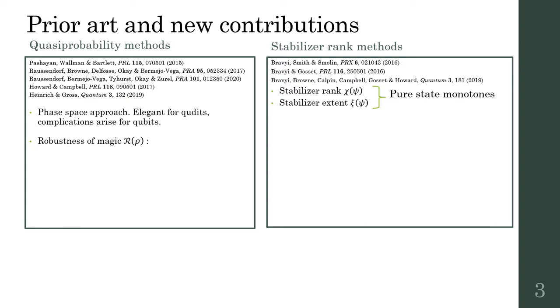Recent work can broadly be divided into two strands: quasi-probability methods and stabilizer rank methods. Quasi-probability approaches include phase-based methods, where hardness of classical simulation is related to negativity of the discrete Wigner function. This approach works elegantly for odd-dimensional qudits but has technical issues with qubits, which is what we're primarily interested in. Another approach is the robustness of magic, introduced by Howard and Campbell, which is more closely related to our methods.